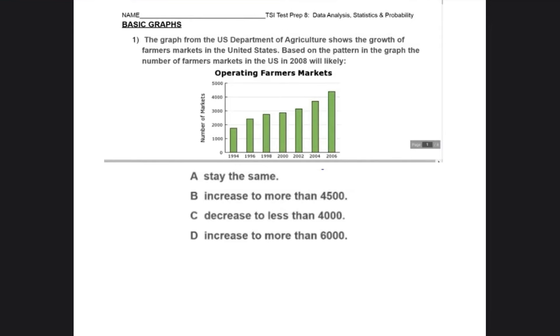Okay, so here are two sample questions that may appear on the TSI test. This one is dealing with a bar graph. The question says the graph from the U.S. Department of Agriculture shows the growth of farmers markets in the United States. Based on the pattern in the graph, the number of farmers markets in the U.S. in 2008 will likely,